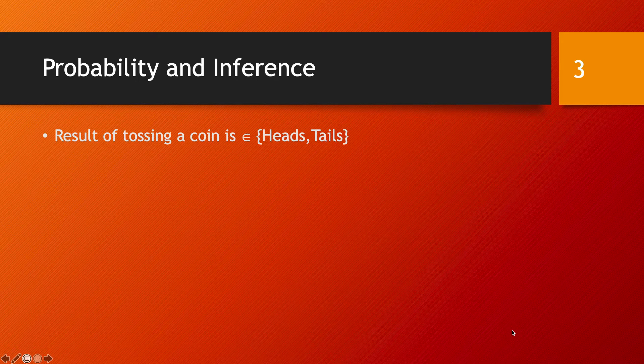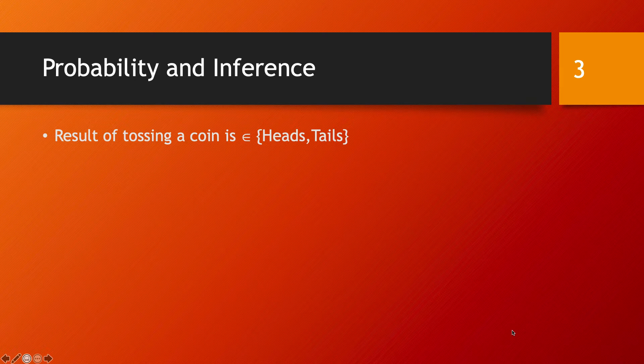For example, tossing a coin can give us heads or tails, and we see this as a random process because we cannot predict whether the outcome will be heads or tails.